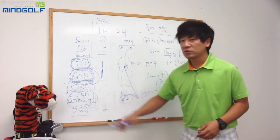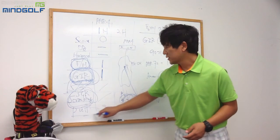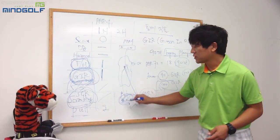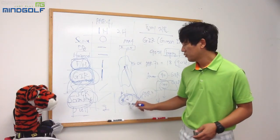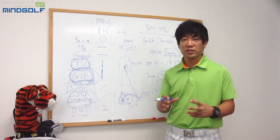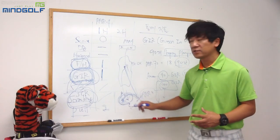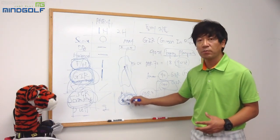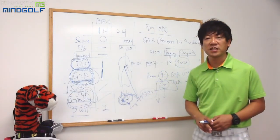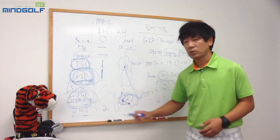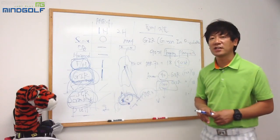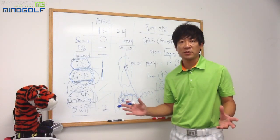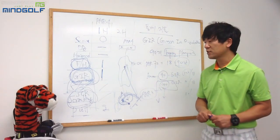퍼팅과 관련해서, 그린 주변 프린지나 에이프런에서 퍼터로 어프로치를 하더라도 이것은 퍼팅 개수로 들어가지 않습니다. 실제 통계에서는 어떤 도구가 중요한 것이 아니고 어떤 장소가 중요해서 그린 위에서 한 것만 퍼팅으로 집계됩니다. 그래서 그린을 놓쳤어도 퍼터로 붙여서 원퍼트 하는 경우도 스크램블링 성공으로 봅니다. 고수로 갈수록 이런 숏게임 스크램블 능력이 굉장히 뛰어납니다.